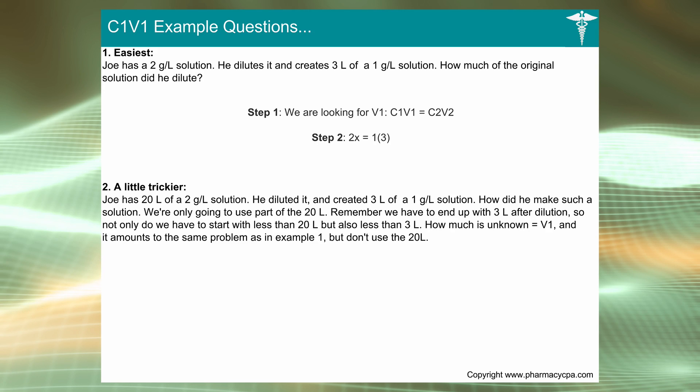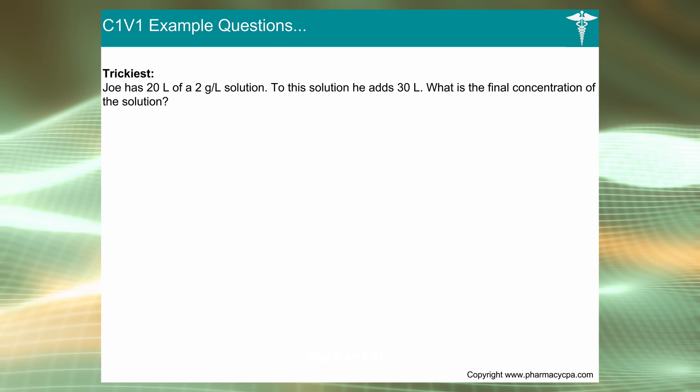Then you know the resulting concentration and the resulting volume. All you do is rearrange the formula and you get 1.5 liters. This one's a little bit trickier. Joe has 20 liters of a 2 grams per liter solution. He diluted it and created 3 liters of a 1 gram per liter solution. How did he make up such a solution? We're only going to use a small part of the 20 liters. Remember, we have to end up with 3 liters after dilution. C1V1 is probably the best way to do this and you get 1.5 liters again.